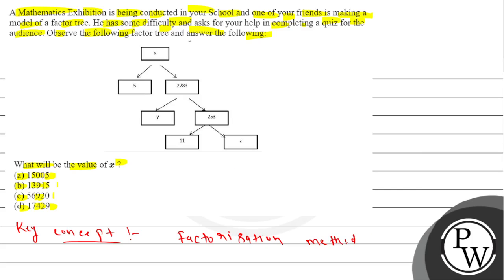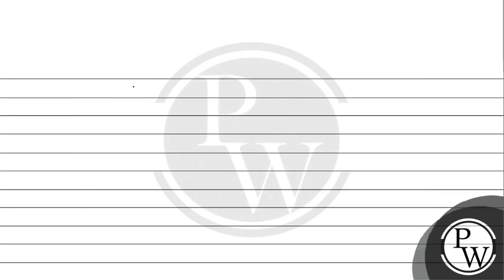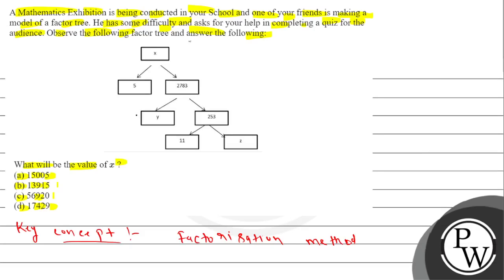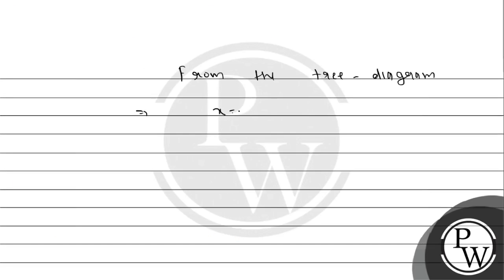Here we have three diagrams. In this method, we need to find which value should be X. The value of X will easily be found from the tree diagram. What will we call this total? We can dial our X from the factor tree. Why do we draw this factor? The factor is 5 in 2.